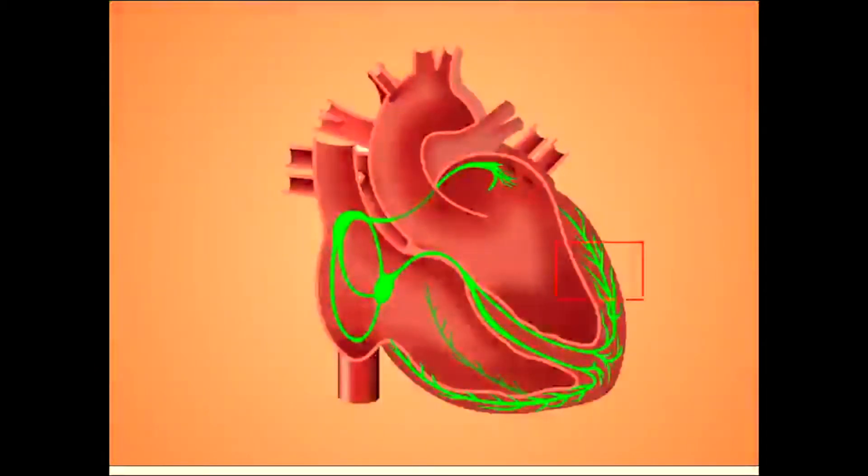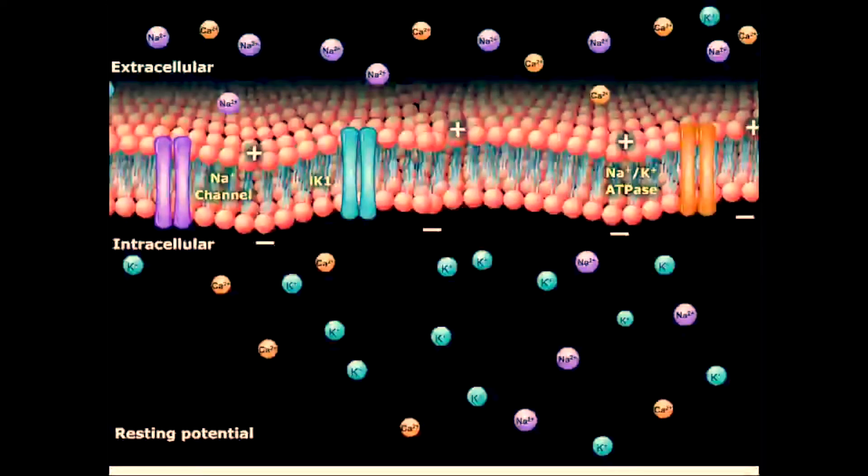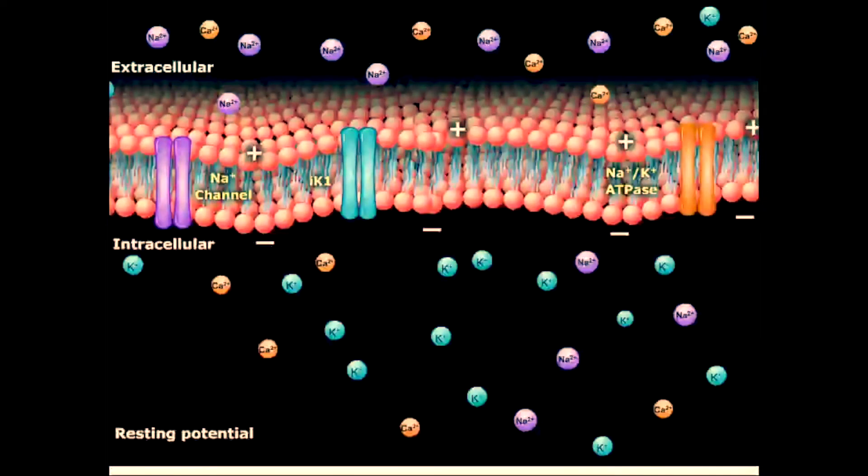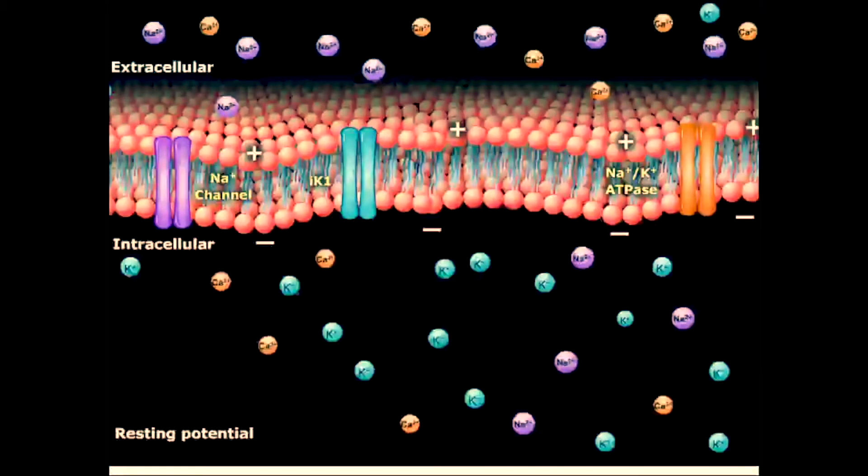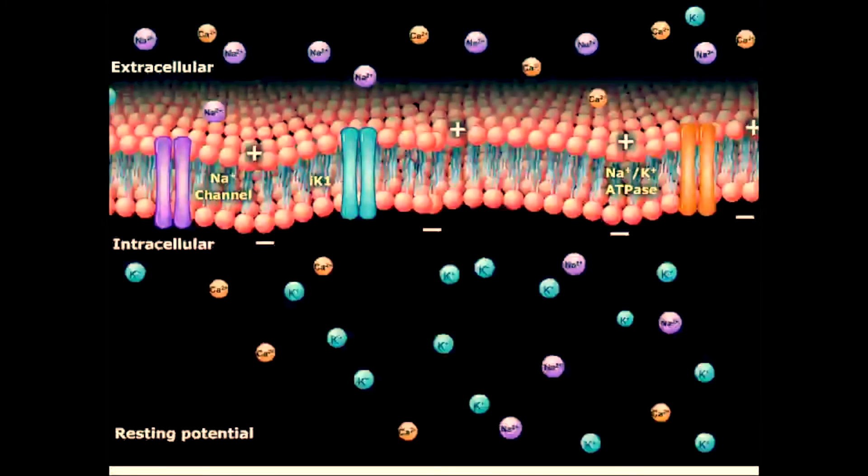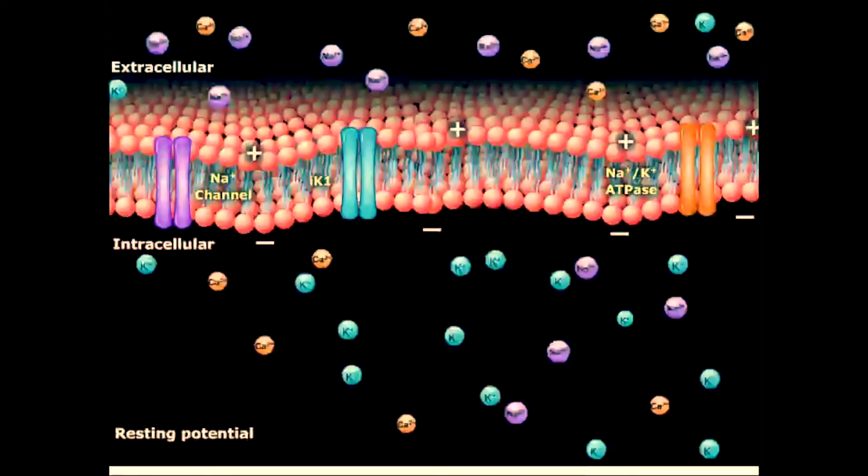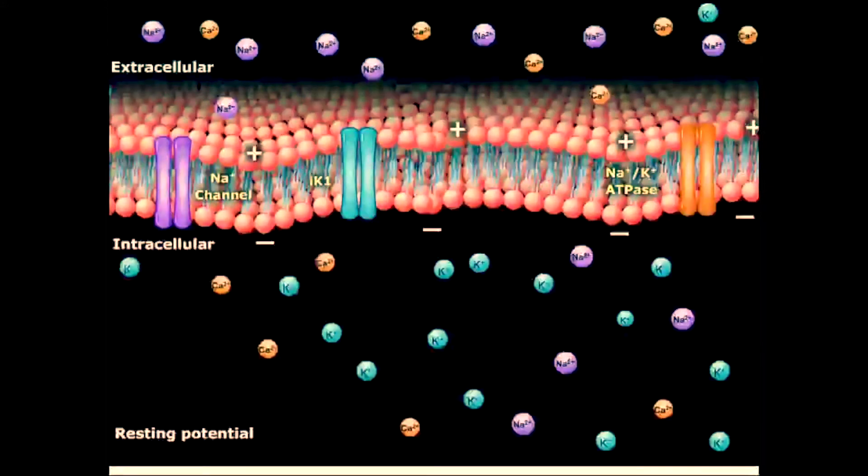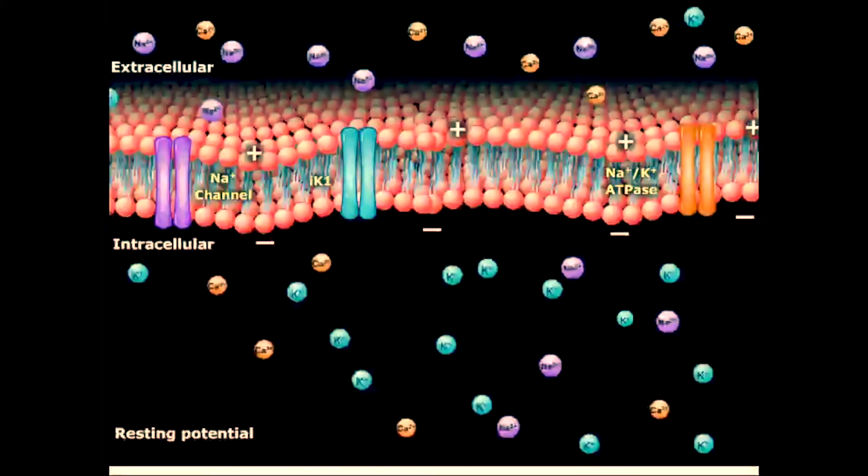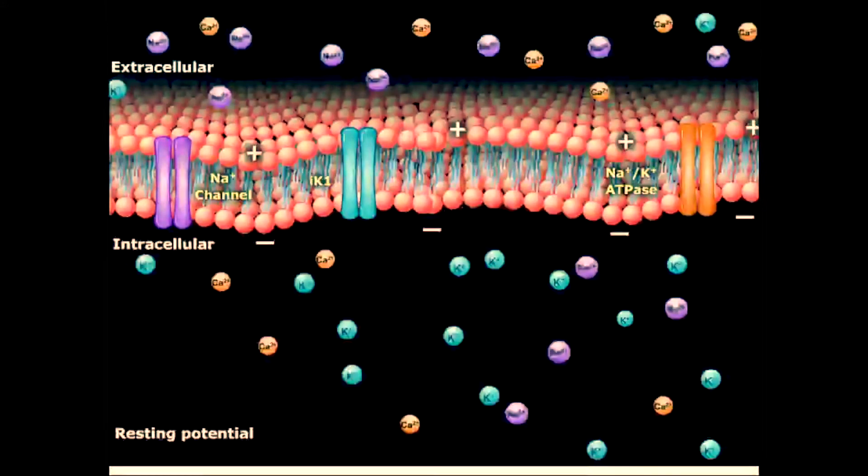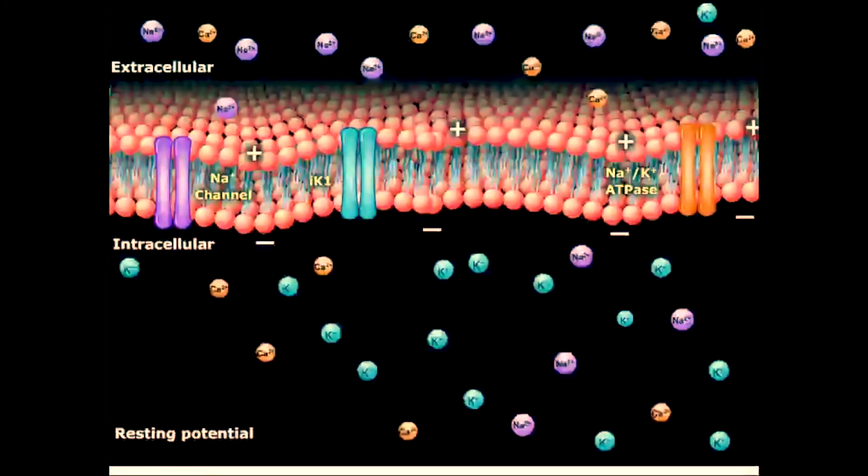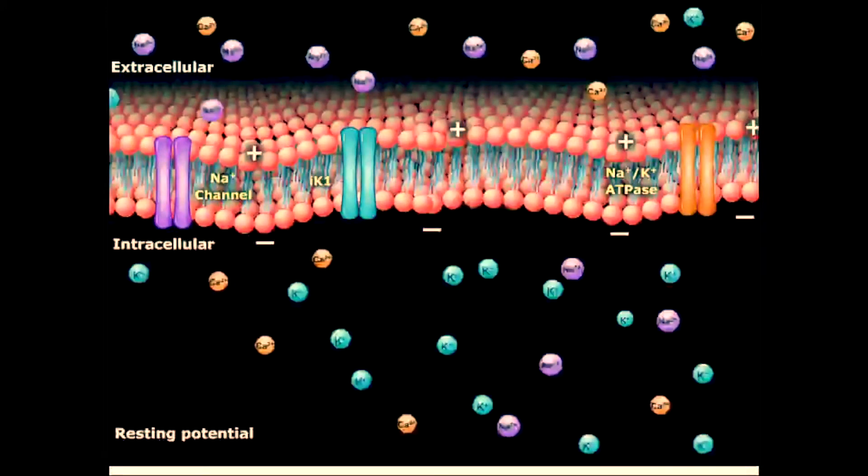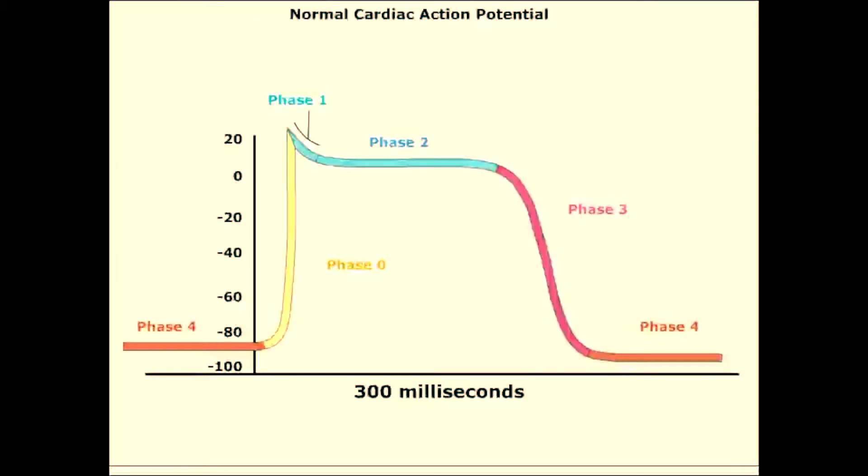Let's take a closer look at the myocardium to show the events occurring at the cell membrane level. Under resting conditions, the inner surface of the cell membrane is negatively charged, whereas the outer surface is positively charged. This difference in electrical charge across the membrane is referred to as the resting membrane potential.